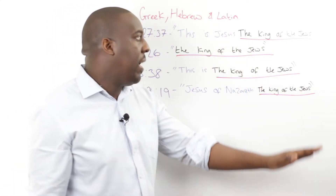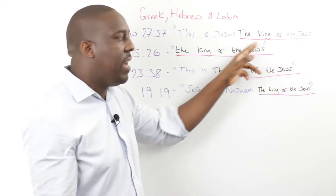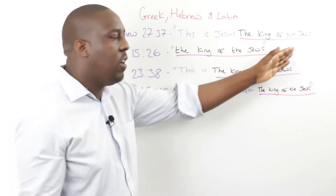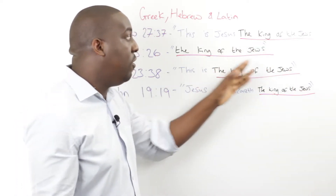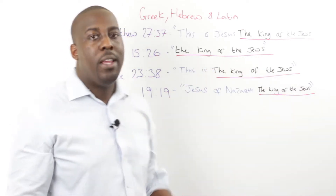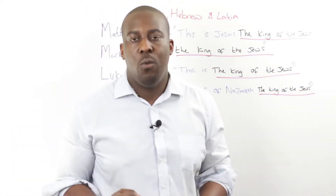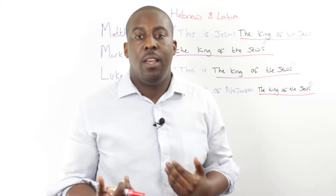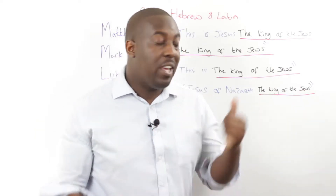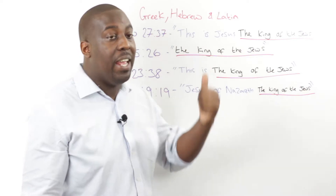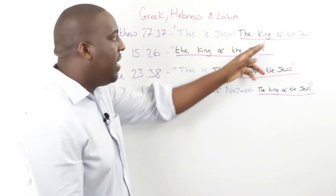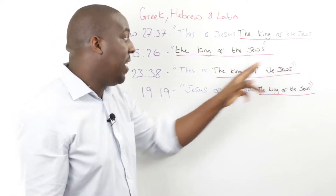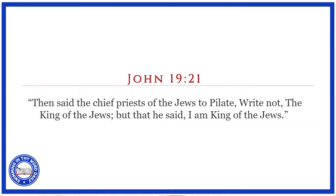One reason I underlined 'the King of the Jews' is that it appears in every single scenario, and I'd be concerned if it didn't — because this is the key point. How do we know it's the key point? In one of the gospel accounts — the one that tells us Pilate wrote these signs in Hebrew, Greek, and Latin — it says that the Jewish authorities, the Pharisees, came to Pilate and said, 'Don't write the King of the Jews,' because that phrase appears in each account.